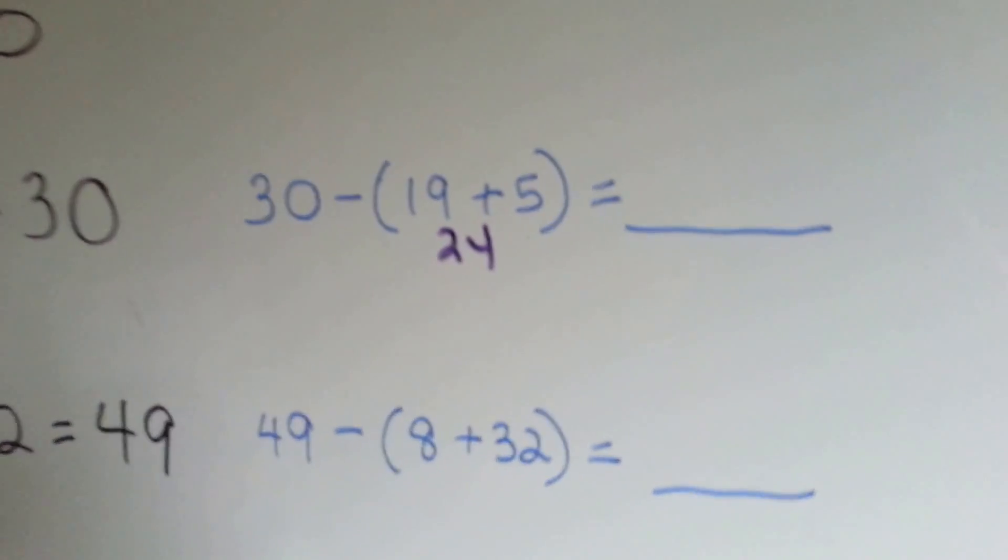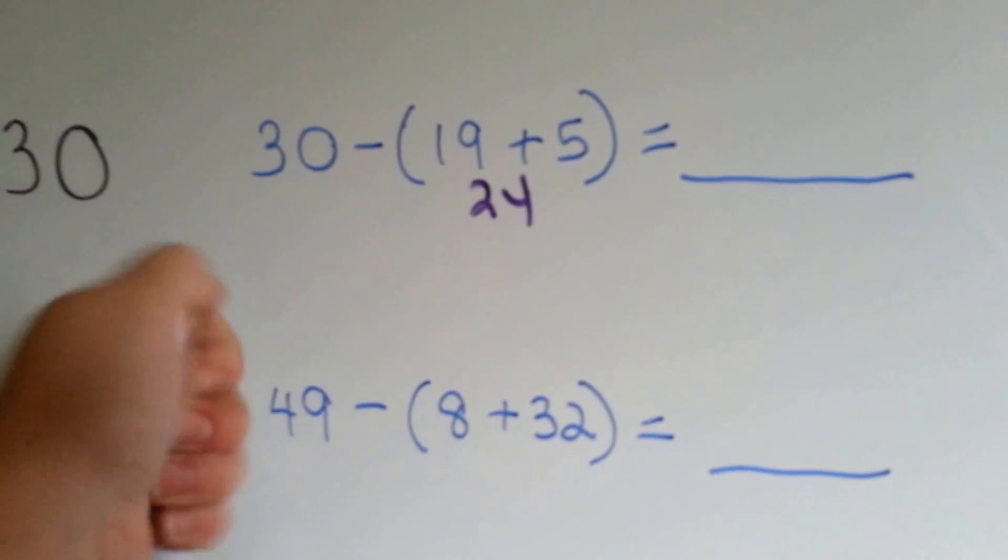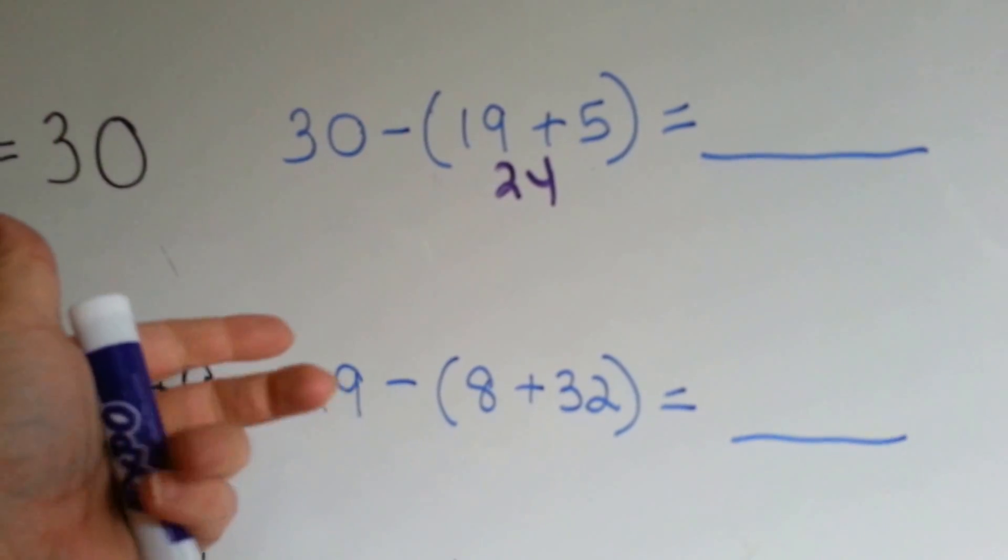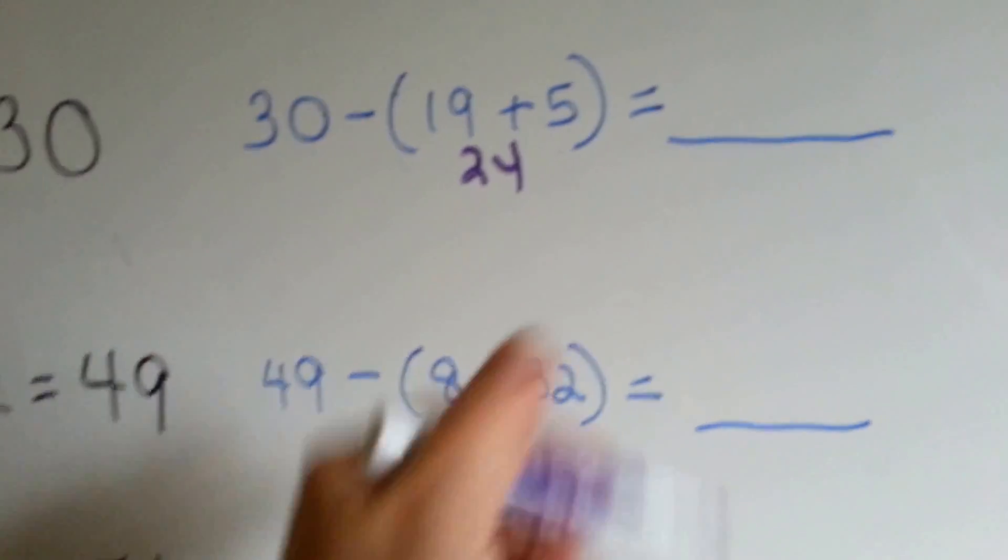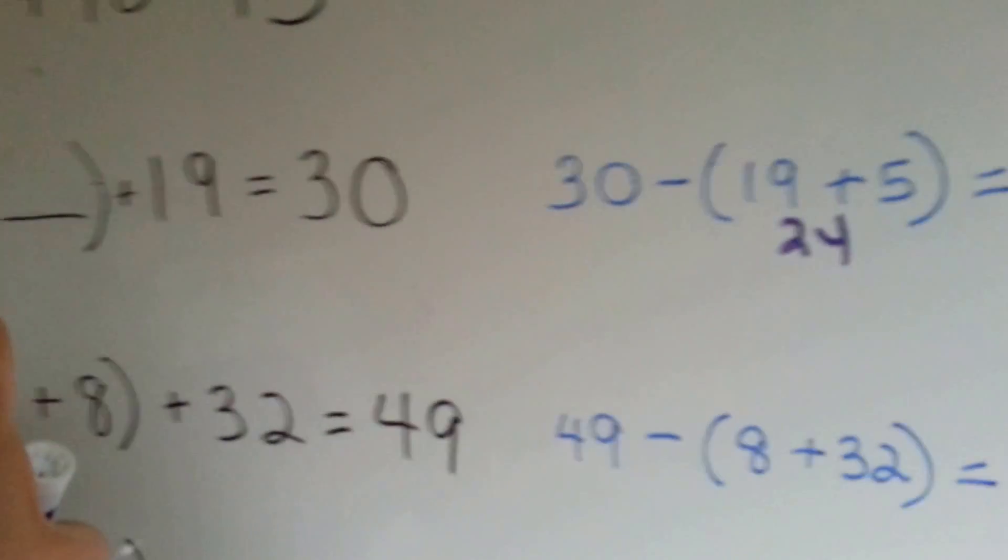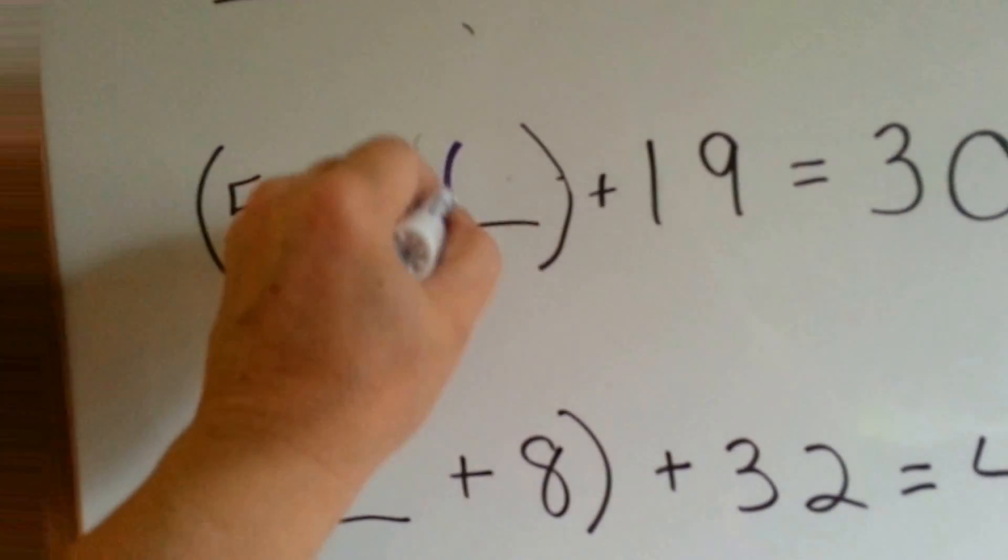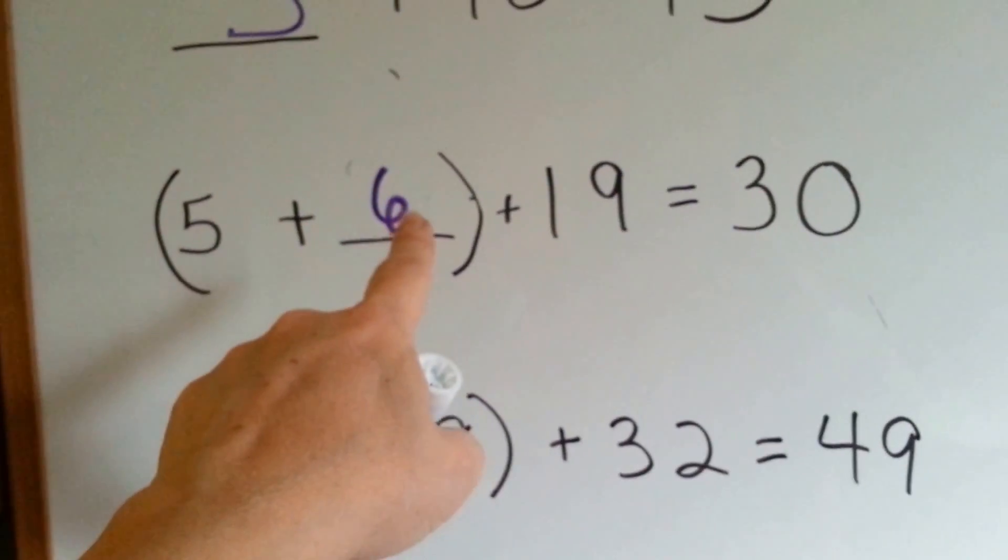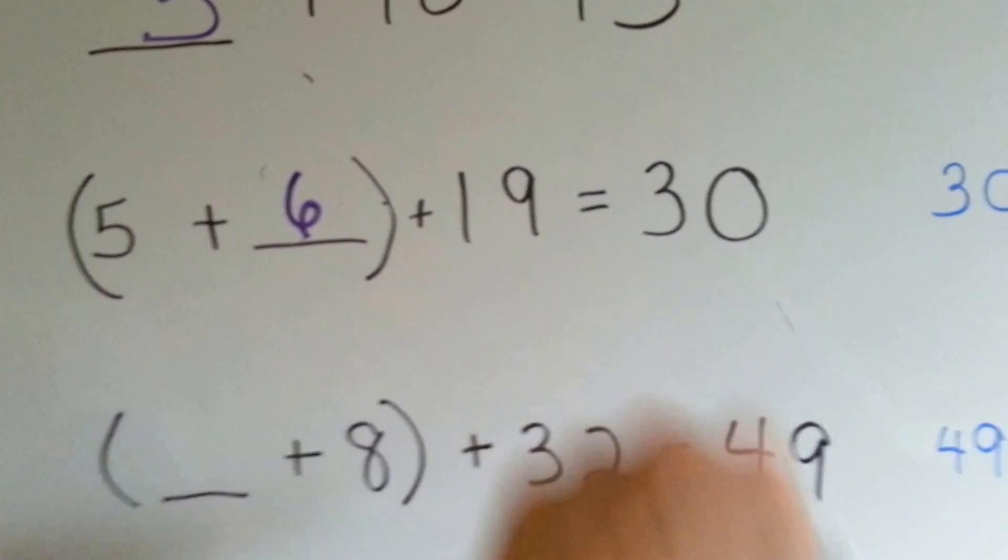30 take away 24 is 6. So our missing number is 6. 5 plus 6 plus 19 equals 30.